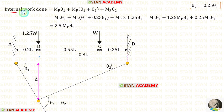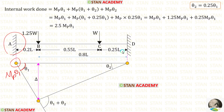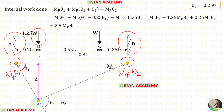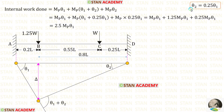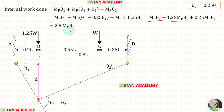Now let us find the internal work done. At the fixed end A, we have a plastic hinge — we multiply Mp by angle theta 1. At the fixed end B, we also have a plastic hinge — we multiply Mp by angle theta 2. Under the load at C, we have a plastic hinge — we multiply Mp by angle theta 1 plus theta 2. Adding these three values, and substituting theta 2 equals 0.25 theta 1, we get the internal work done equal to 2.5 Mp theta 1.